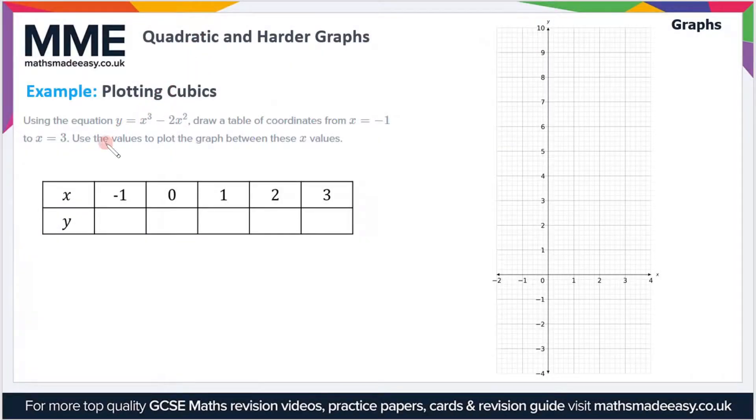So if we move on now to look at an example with cubics, using the equation y equals x cubed minus 2x squared. Draw a table of coordinates from x equals minus 1 to x equals 3. Use the values to plot the graph between these x values. Well, we've got our table already, so now we just need to plug in these values for x.